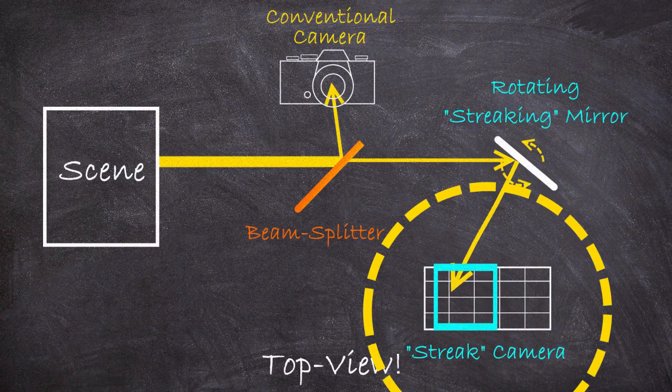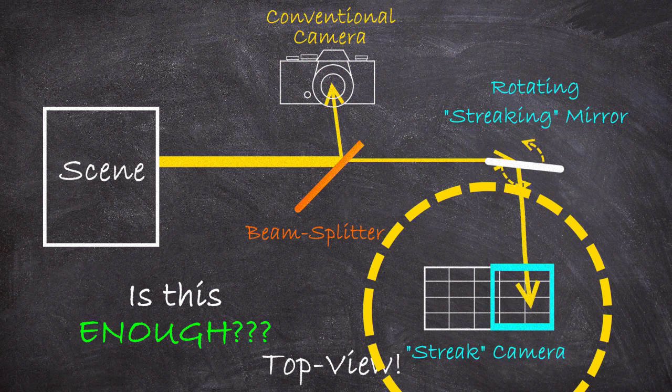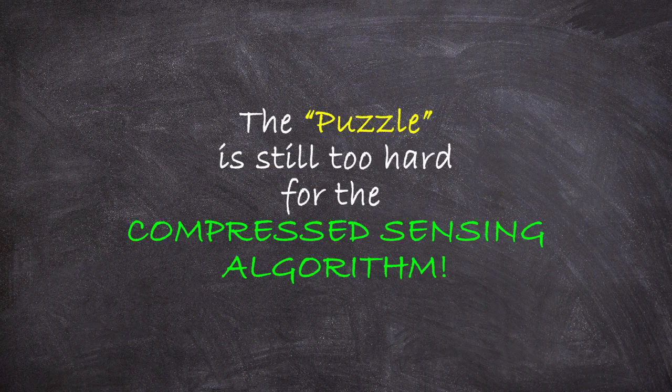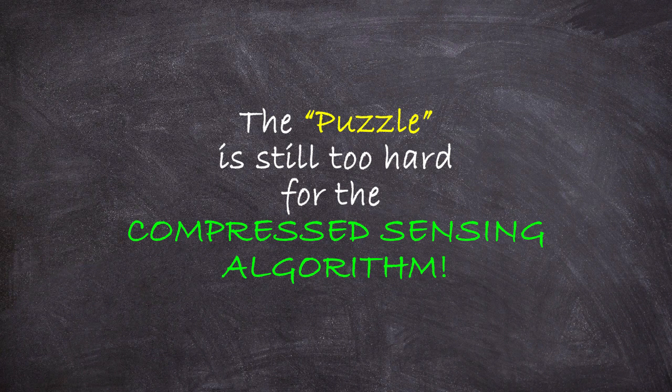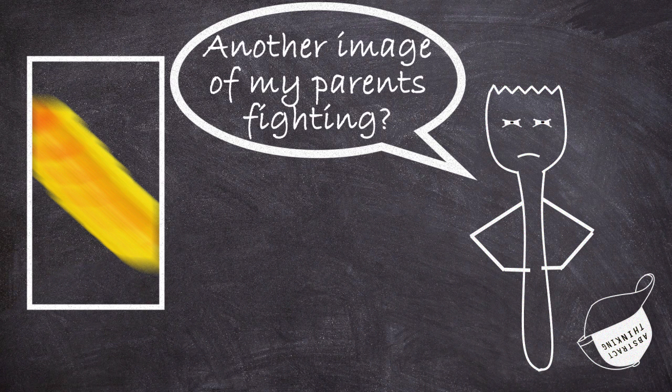So then can you combine the regular temporally integrated image with the time sheared streak camera image and reconstruct the scene? Almost but not quite. It turns out that's not enough for the compressed sensing algorithm and you can probably see why this time sheared image is super hard to interpret as it blurs together motion and time with motion and space.